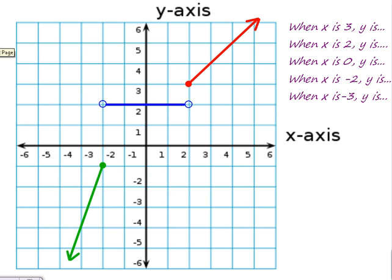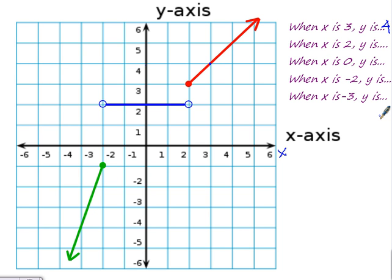When X is 3, what is Y? Here's my X axis — when X is 3 it looks like Y would be 4. Now notice there are three separate pieces of this graph — this is an example of a piecewise function. I want you to identify: when X is 2, 0, negative 2, and negative 3, what is Y? Hit pause and try that.